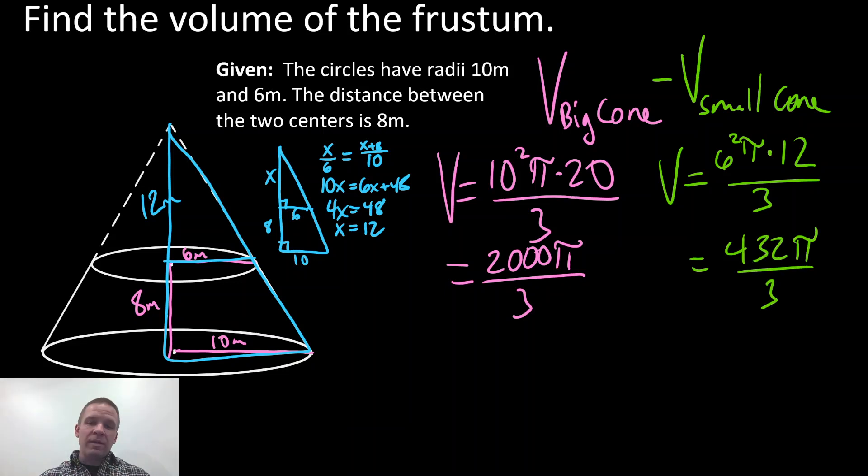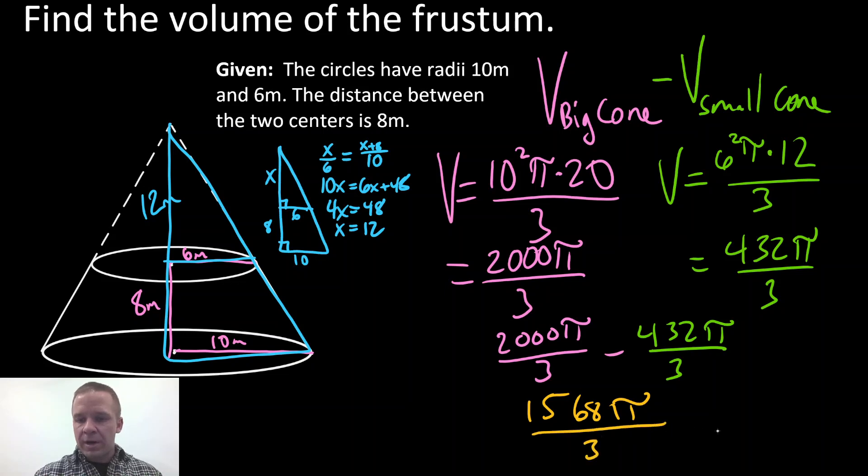The reason why I'm leaving them over 3, even though the one on the right can be simplified but the one on the left can't, is because if I'm going to subtract these two to get my frustum volume, I'm going to need a common denominator anyways. So I'm going to have 2000 pi over 3 minus 432 pi divided by 3, and I'm going to end up with a final answer of 1568 pi over 3. And we got meters cubed.